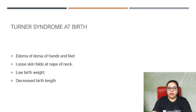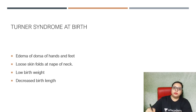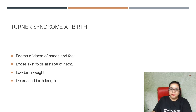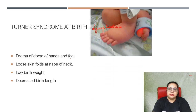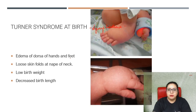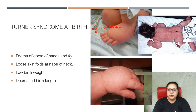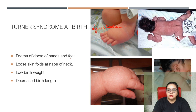At birth, Turner syndrome patients mostly present with lymphedema — edema of the dorsum of the hands and feet. They can also have loose skin folds at the nape of the neck. They are born with low birth weight and decreased birth length, which accounts for the short stature.